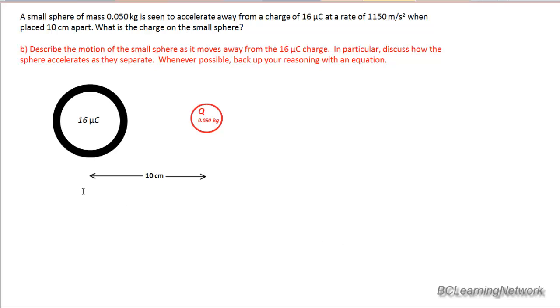In this question we've got two objects each holding a charge. One of the charges is given on the larger object. It has a charge of 16 microcoulombs and the goal originally was to find the charge of the smaller one, the 0.05 kilogram sphere, if it's 10 centimeters away from the larger one. And the information they give you is as follows.